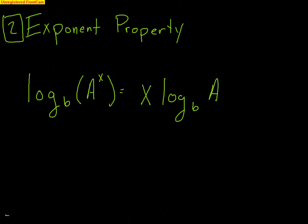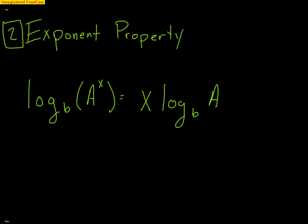The exponent property is a very simple one. It says that if you have log base b of any value — that's the a — and you have an exponent, that exponent can come down in front of the log and be written as x times the log base b of that value. So an exponent can fall down in front of a log.